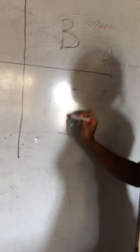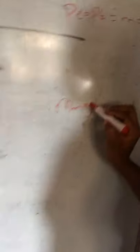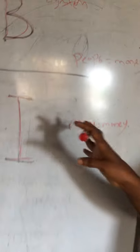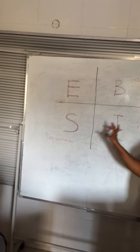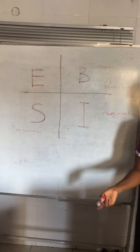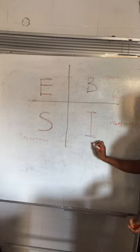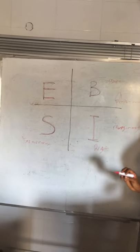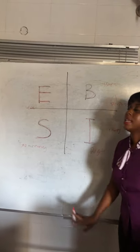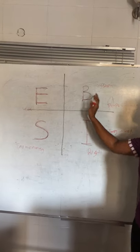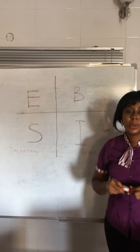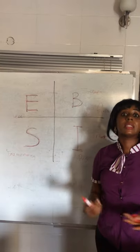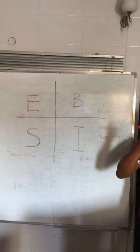Then we have the investor quadrant — these people's money is working for them. Money equals money. They've sent their money on an errand. They have big investments like in real estate. So on the right side of the quadrant, they don't exchange their time for money because they have systems — it's either their money working for them or people working for them. Their income is not dependent solely on them showing up.